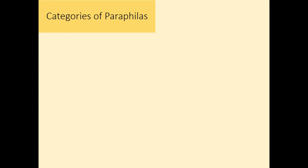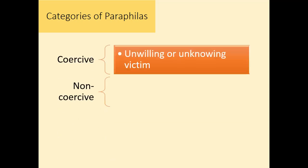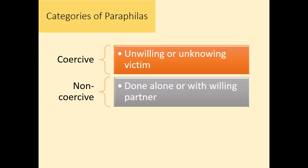There are different categories of paraphilias: coercive and non-coercive. Coercive is where you need an unwilling victim, or a victim who doesn't even know they're being victimized — their lack of awareness is part of the arousal — so you're taking advantage of someone, and had they had the opportunity to decline, they would have. In non-coercive paraphilias, you either do it by yourself or you have a willing partner who is also into it. We're going to start with the coercive paraphilias in the next segment.